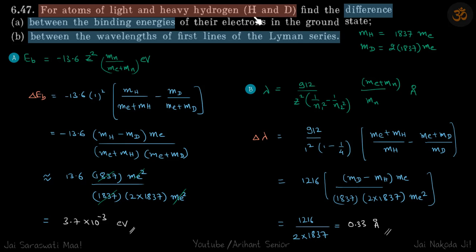But when we consider the movement of the nucleus as well, then you can see that there is a difference between the binding energies and that is this much. You can also see that binding energy of hydrogen is less than that of deuterium, or in other words, it's easier to take out the electron from hydrogen than in deuterium.